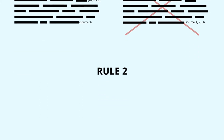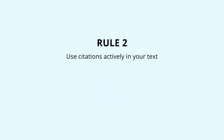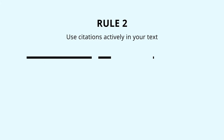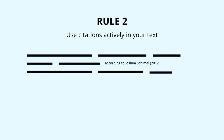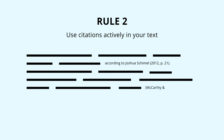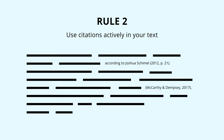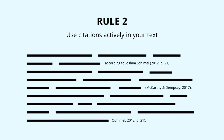Rule number two: use citations actively in your text. You can either integrate the author's name as part of a sentence, or place the name in parentheses along with the publication year, and, if relevant, the page number. These examples follow the APA citation style. There are also other citation styles.